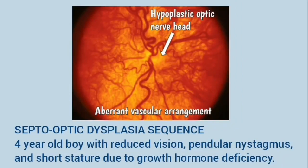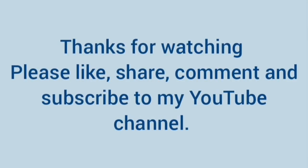This is septo-optic dysplasia sequence in a four-year-old boy who presented with reduced vision, pendular nystagmus, and short stature. The fundus shows a hypoplastic optic nerve head and an abnormal vascular arrangement. Thanks for watching this video — please like, share, comment, and subscribe to my YouTube channel.